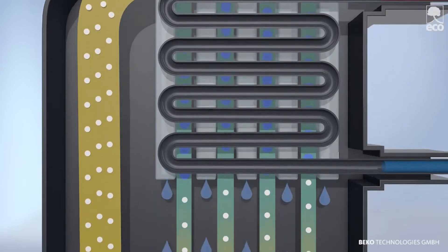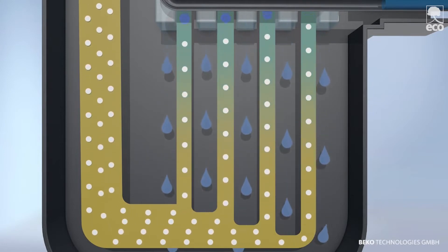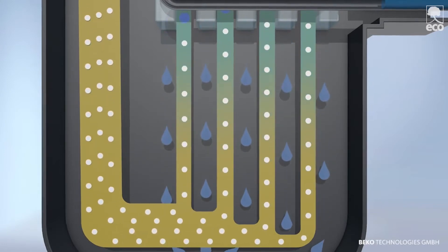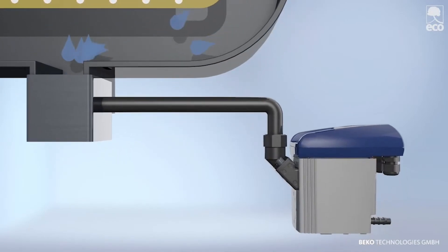The ideally dimensioned demister removes 99% of the water droplets. The condensate then simply flows into the integrated Baecomat condensate drain, all without the loss of compressed air.